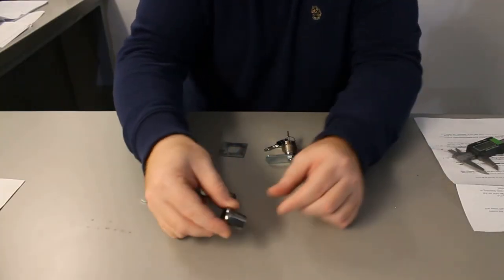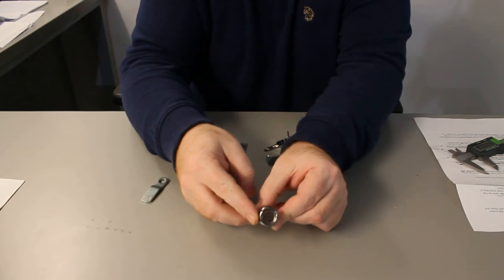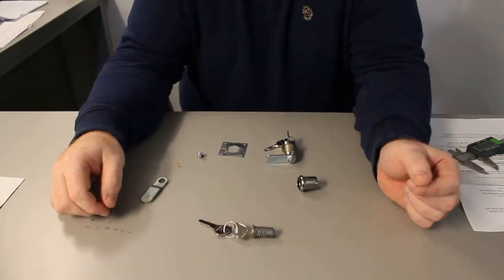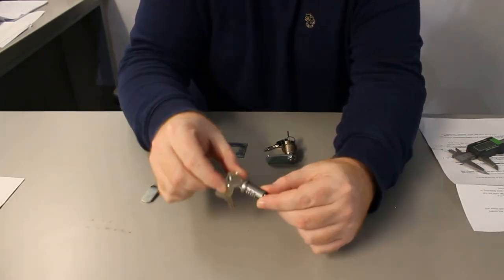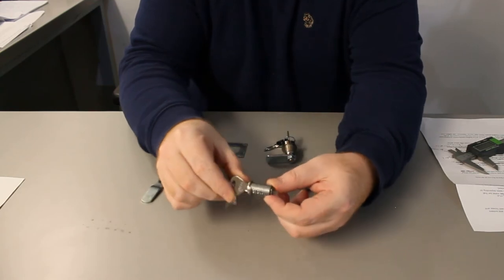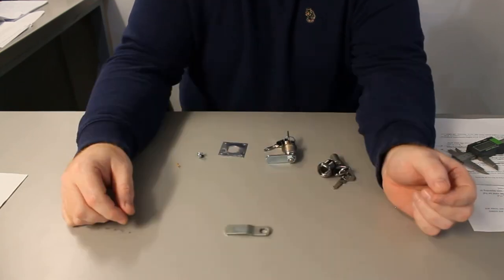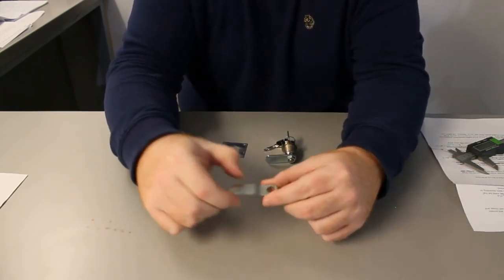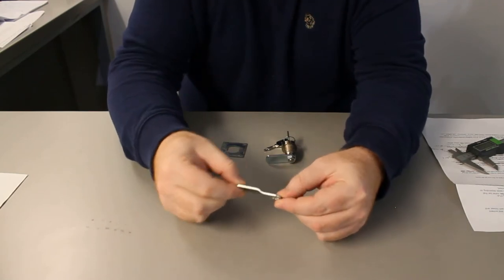They are made up of three main components. First is the housing or lock body. Second is the cylinder. Third is the actuator arm, normally referred to as the cam. This is the metal bar that locks the furniture in place.